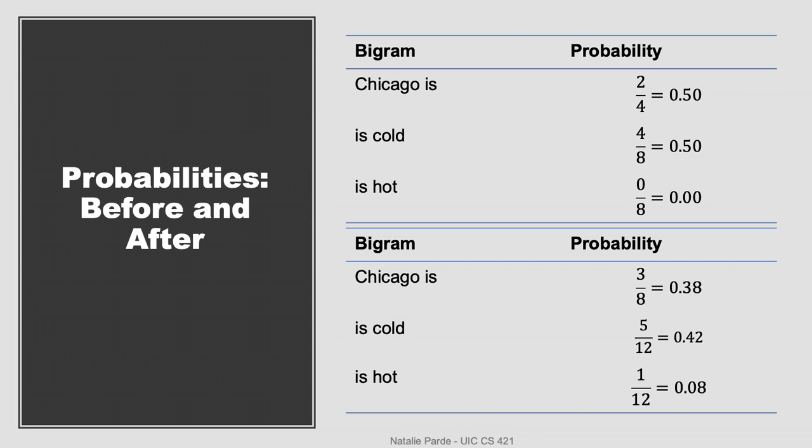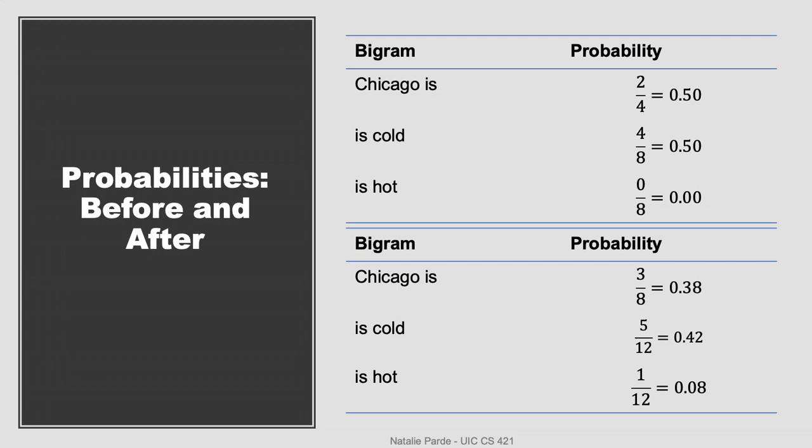Now this process, as we can see, resulted in distinct changes to our probabilities. The bigram probabilities that were large previously ended up decreasing due to smoothing, and the probabilities that were small previously ended up increasing. This is exactly what we'd hoped for. We successfully redistributed some of the probability mass from really frequent n-grams to really infrequent ones. However, it might have even worked a little bit too well. Maybe we didn't want to move the probability for Chicago is all the way from 0.5 to 0.38.